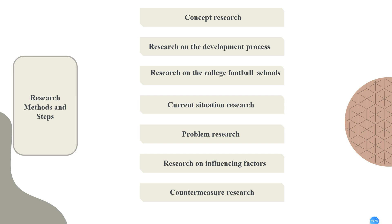The research method involves seven steps. First, concept research: using the method of literature review, this paper studies the related concepts in the development of college football. Second, research on the development process: through sorting of research on the development process of college football, the development process of college football in China is divided into several stages.